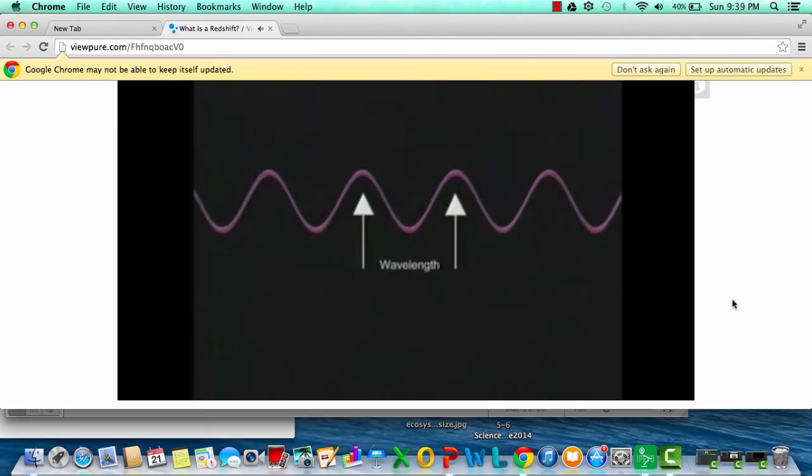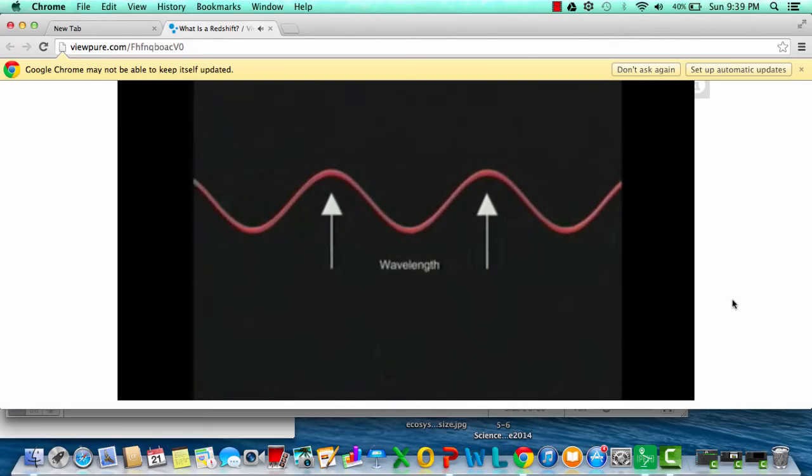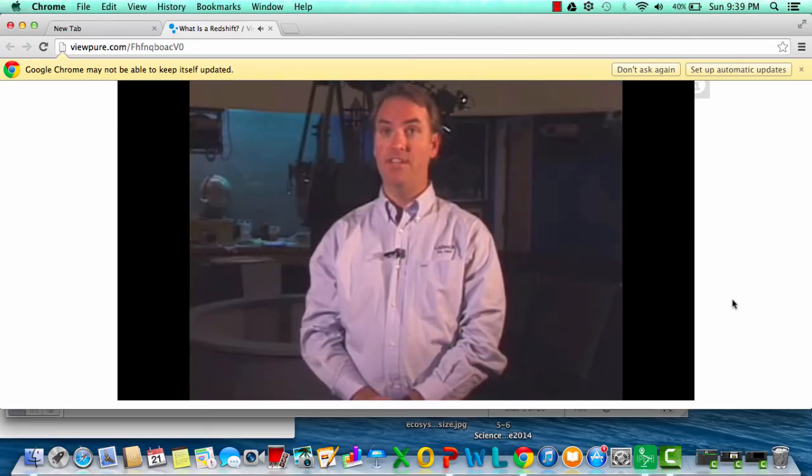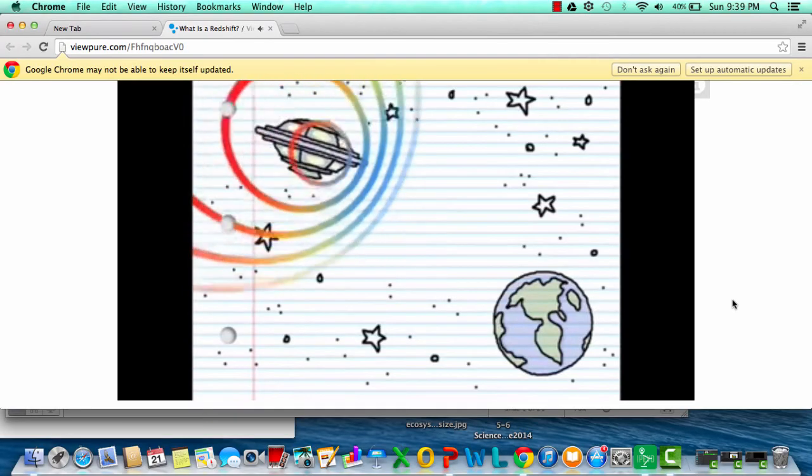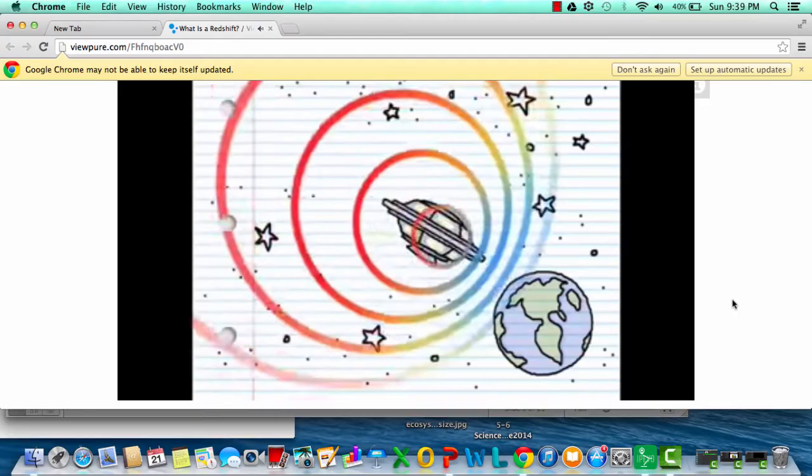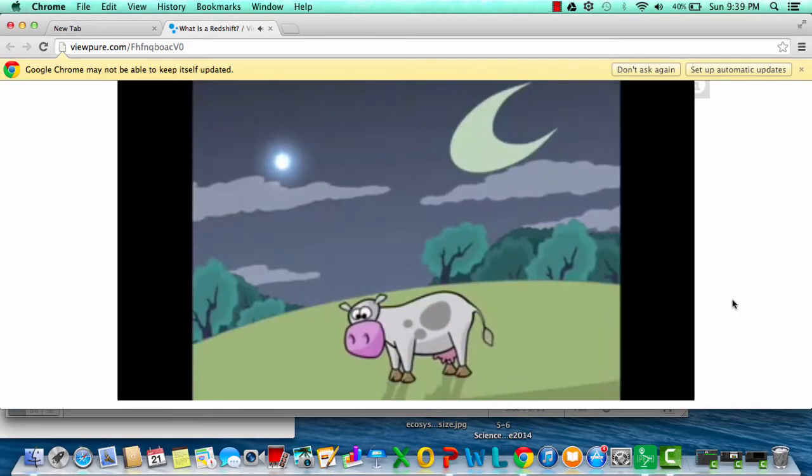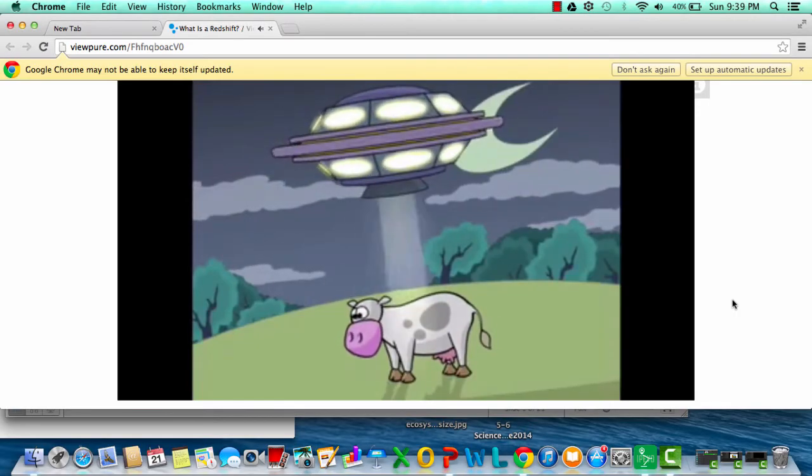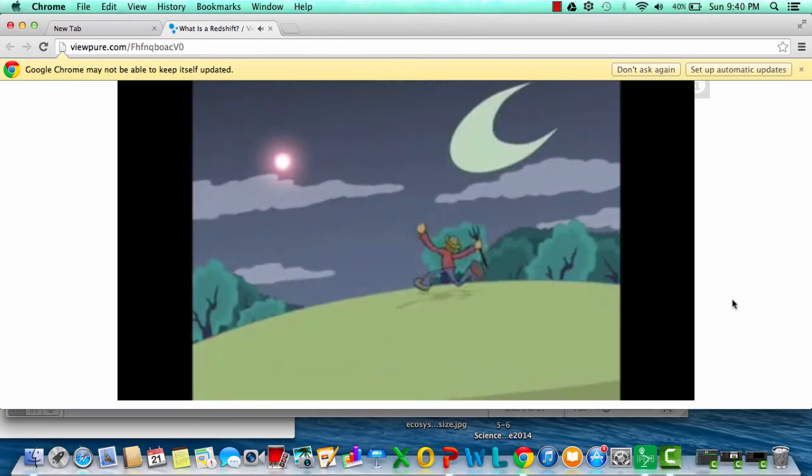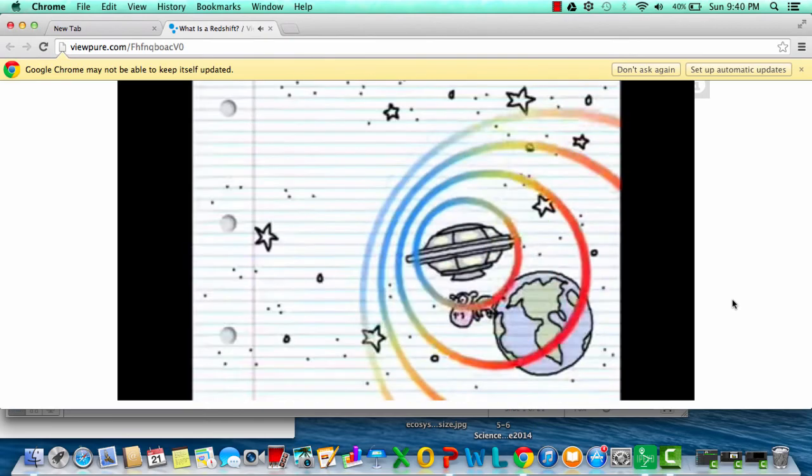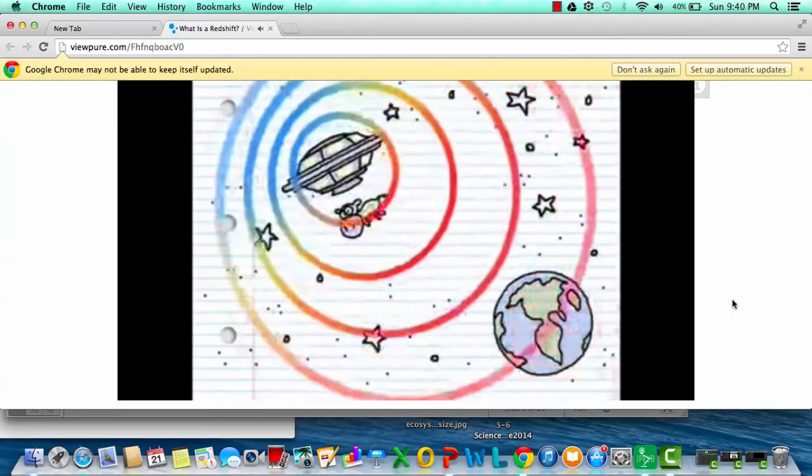Blue light has shorter wavelengths than red light. When an object in space moves towards us, its light waves are compressed into higher frequencies or shorter wavelengths, and we say that the light is blue shifted. When an object moves away from us, its light waves are stretched into lower frequencies or longer wavelengths, and we say that the light is redshifted.